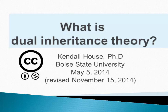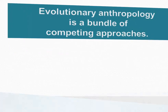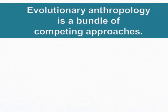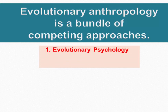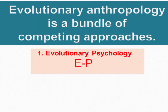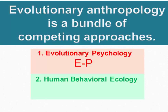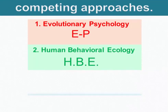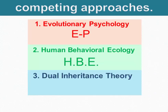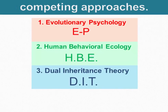This presentation is called 'What is Dual Inheritance Theory?' As we discussed earlier in the semester, what we call evolutionary anthropology is a bundle of competing approaches that are sometimes complementary and sometimes in conflict. We've already looked at evolutionary psychology, abbreviated EP, and we also looked at human behavioral ecology. Now we're going to look at a third approach called Dual Inheritance Theory, abbreviated DIT.